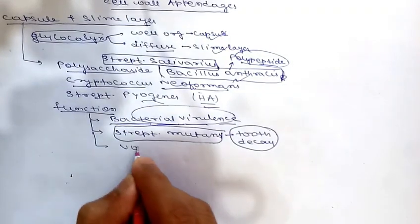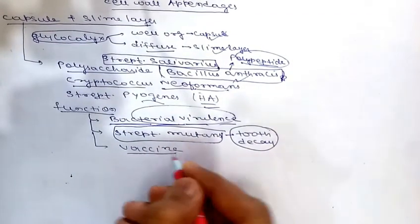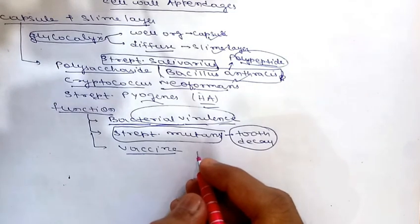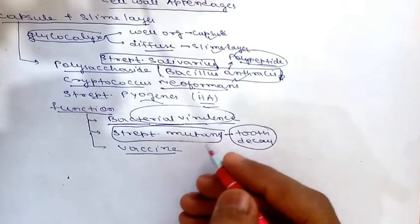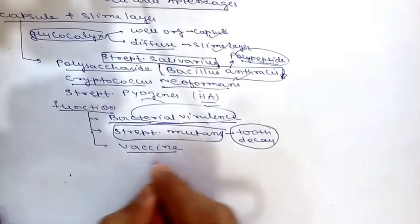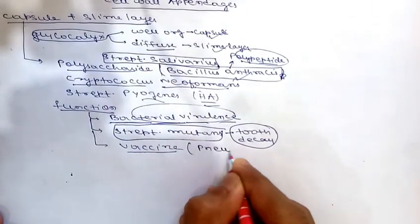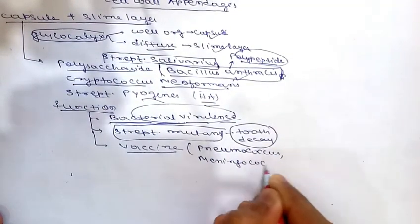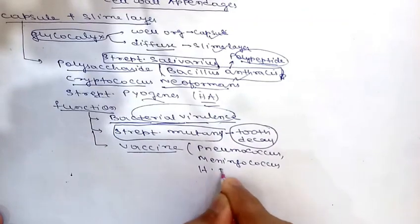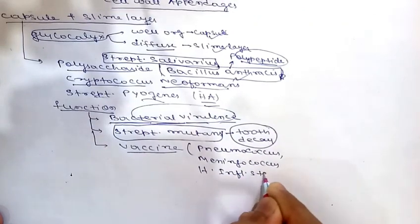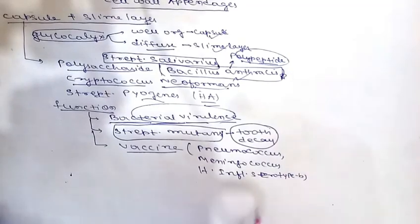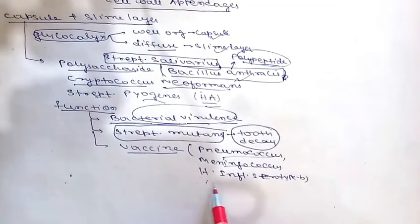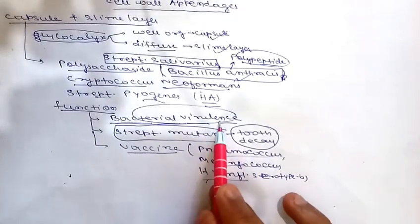The capsule can also act as a vaccine. Capsules of some bacteria are antigenic and anti-capsular antibodies are protective in nature. Capsular antigens of many bacteria are used as potential vaccine candidates — examples include Pneumococcus, Meningococcus, and Haemophilus influenzae serotype B.